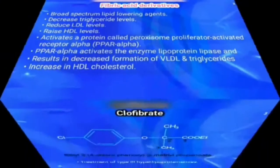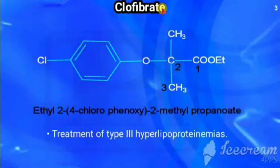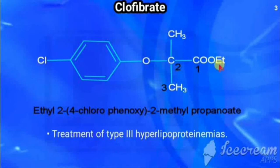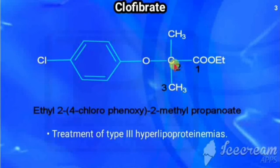Now we are going to see clofibrate. It is a fibric acid derivative that contains chlorine, and it is an ester — specifically an ethyl ester. From the name itself we can say it has chlorine. The structure contains an ethyl ester; ethyl with three carbons is propyl, so it is ethyl propanoate.